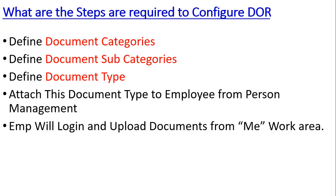From person management, we search for an employee and attach the document type. When we assign the employee role, the employee is able to log in and see the 'Me' option from the navigator menu. From there, the employee will be able to upload their documents. If approvals are enabled, the system will look for the approval options for those documents. Let me show you the setups and where exactly we'll be configuring this.